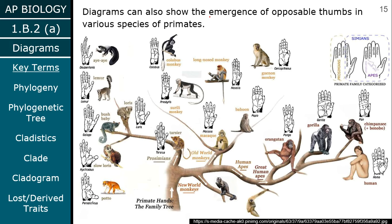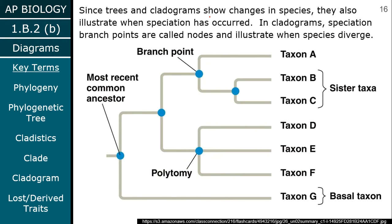We can also see things like opposable thumbs — where do they actually evolve on primates? Looking at a general phylogeny, there are a couple of things to refer to. The most recent common ancestor is way back at the base of the tree. A branch point is anywhere one line branches into two. If two groups share the most immediate common ancestor, we call those sister taxa.